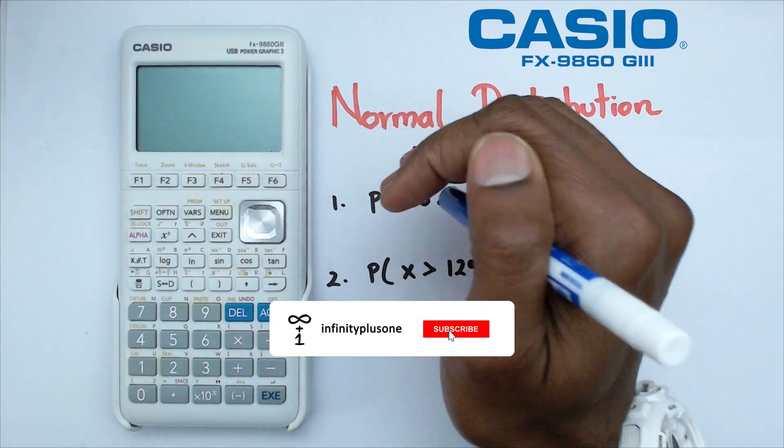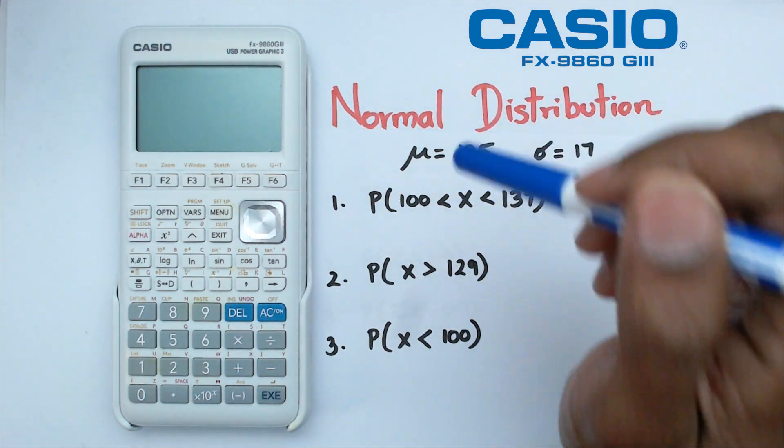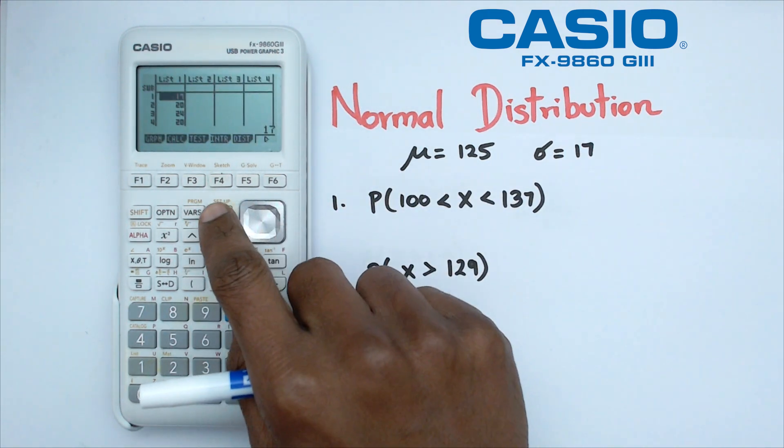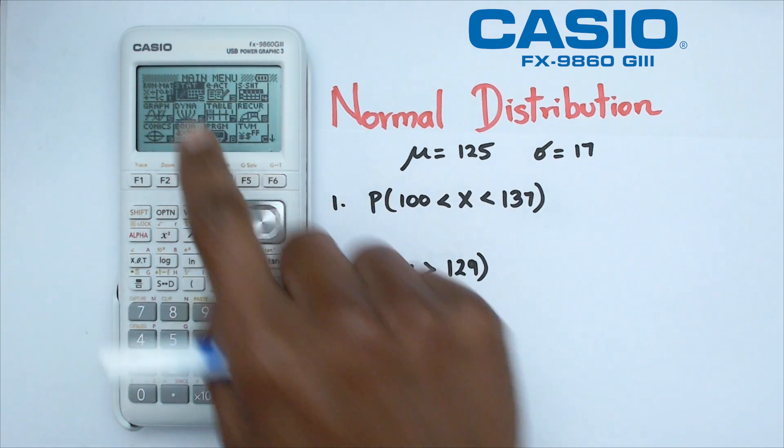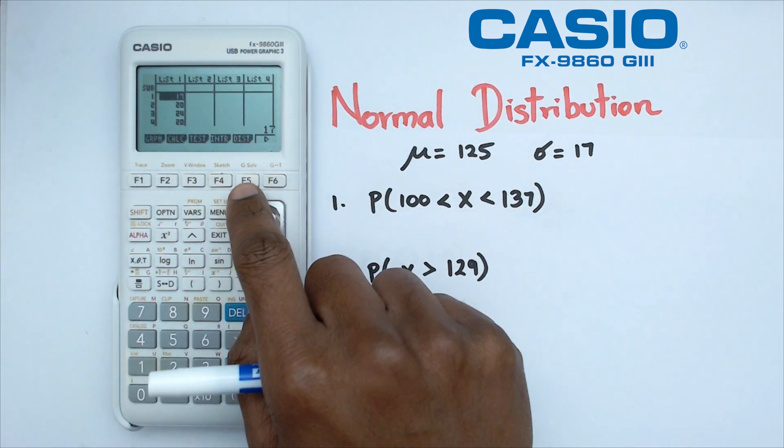Alright, so nothing's different with this particular one apart from us changing the mean and standard deviation. To do this, we're going to switch on the calculator, click on main menu, and we're going to go into the stat mode, and under stat mode, we're going to go into distribution.